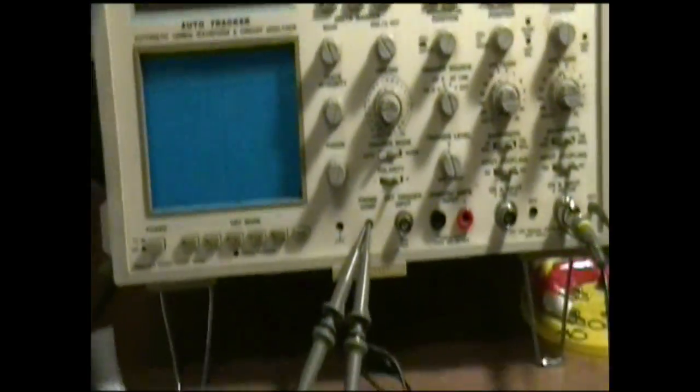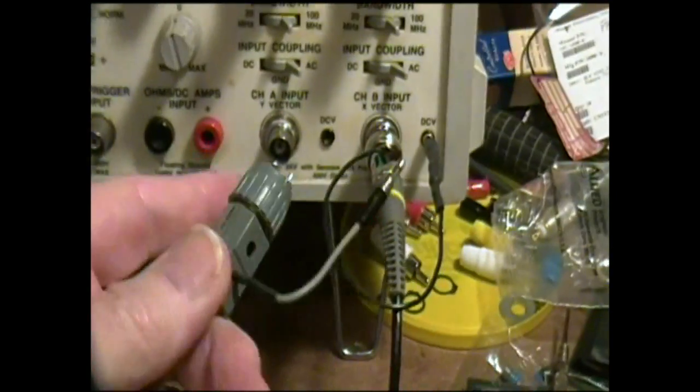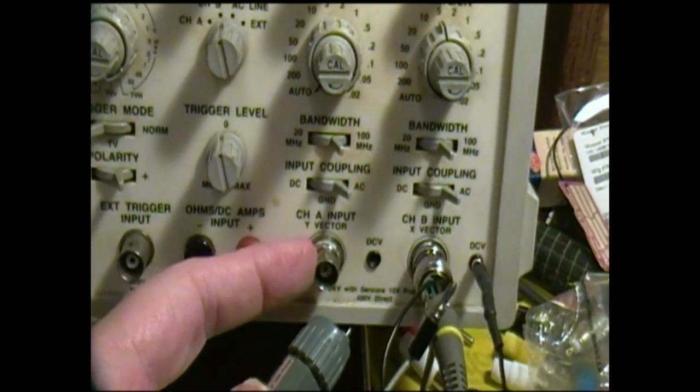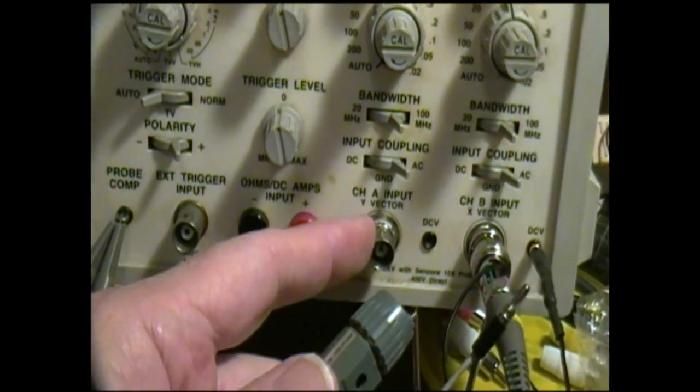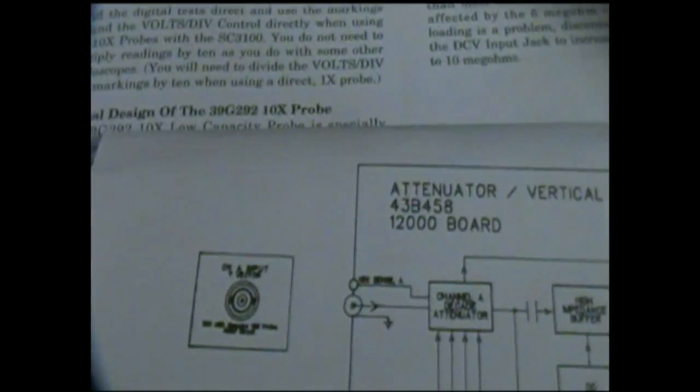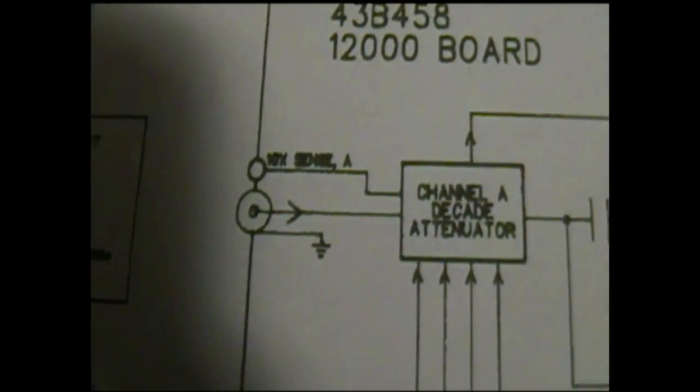You remember I told you that the probe has this little pin sticking out. Well that pin connects that ring to the shield or the ground of the BNC connector, and when it does that the Sencore senses that you have a Sencore probe attached and readjusts everything to compensate for that.